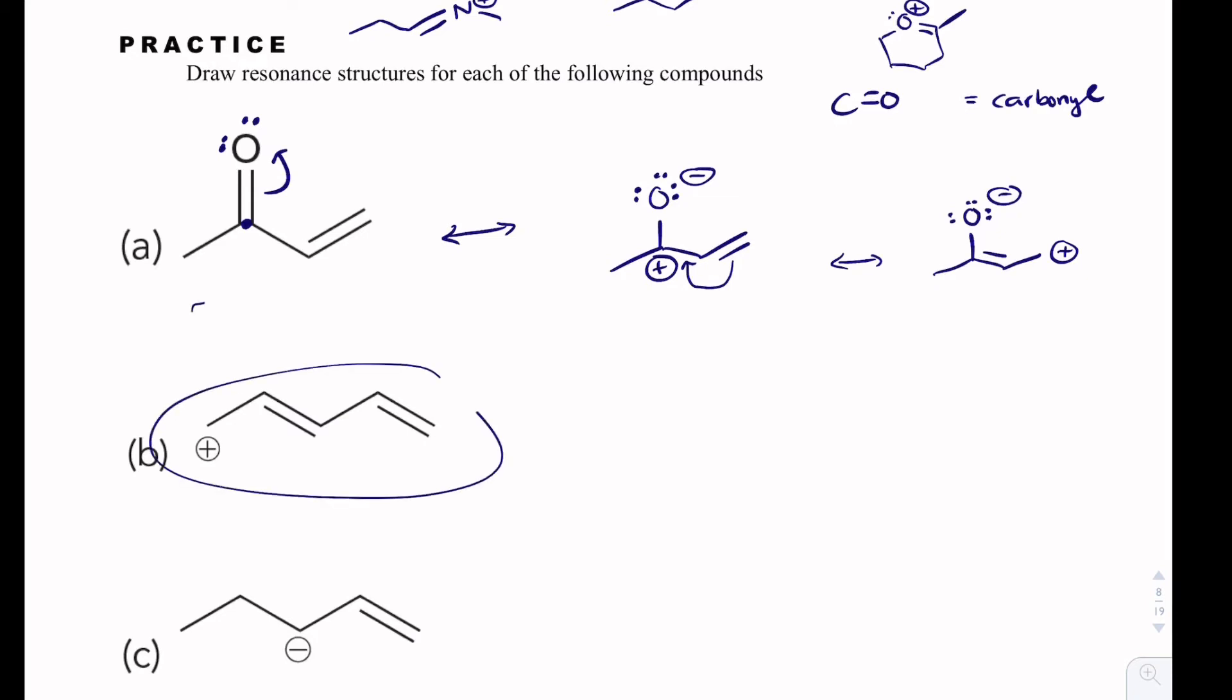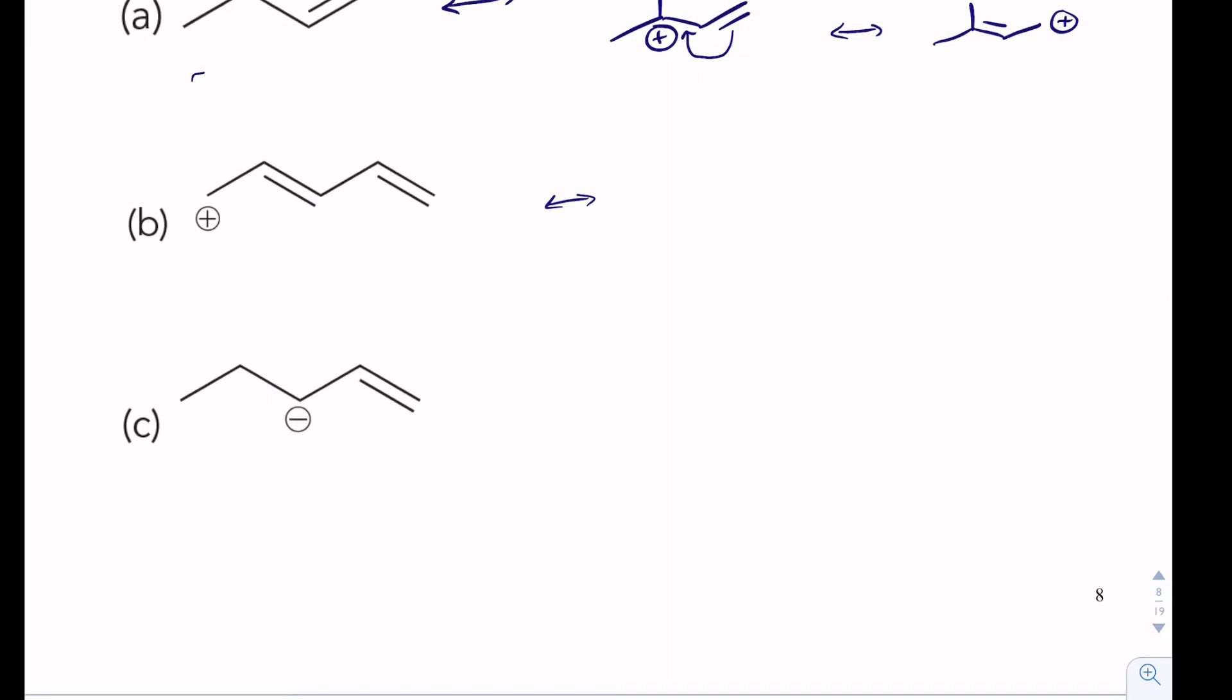So when I do B, when I draw my next structure, I better have just a plus charge, just one plus. Now, as you do B and C, you want to make sure you know the difference between the two of them. In B, we have a positive charge. And in C, we have a negative charge, and the arrows will behave a little bit differently. So please make sure you understand the difference. We are going to move electrons towards the positive charge. We keep our single bonds intact.